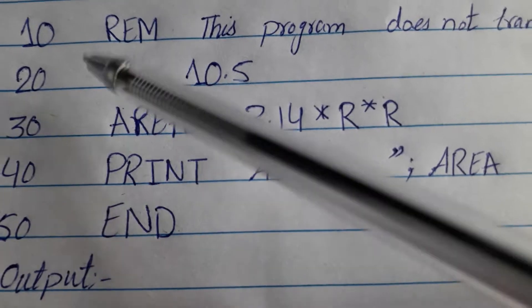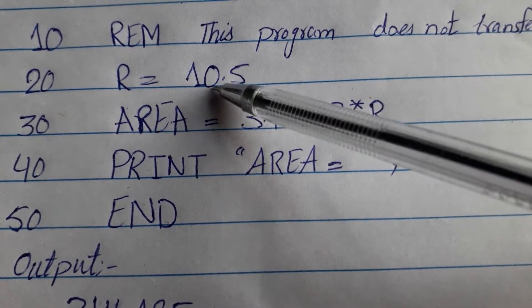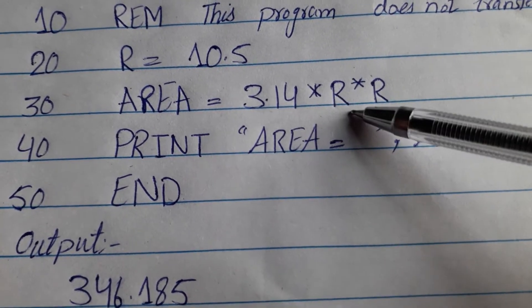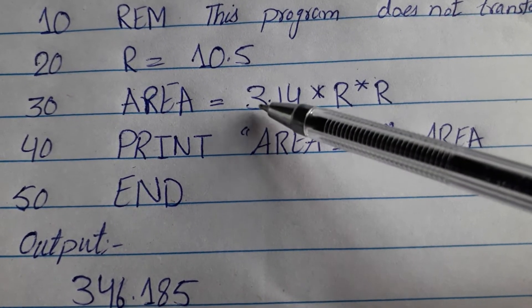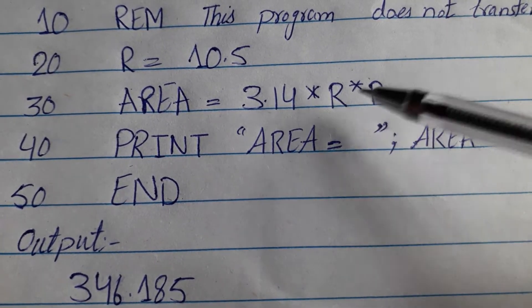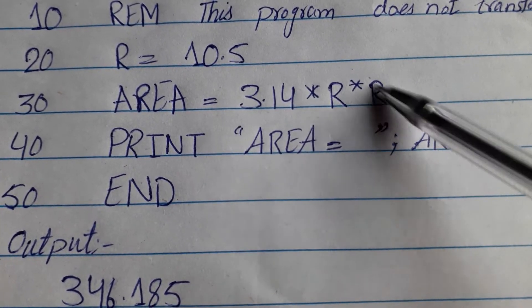Now, we have line number 20. R is equal to 10.5. Now, area. Area formula is pi r square. So, the pi value is 3.14 and r square. We write two times r. Multiply by r and multiply by r. This is a statement.